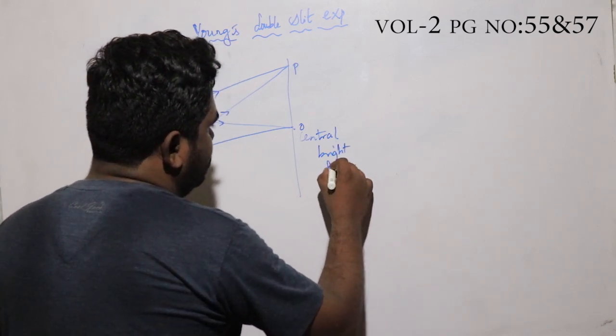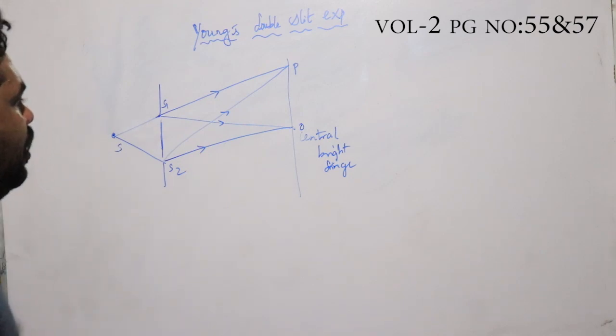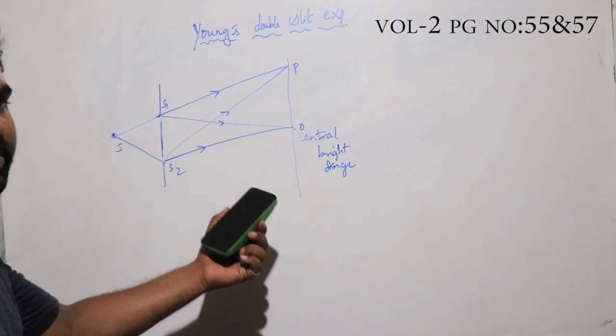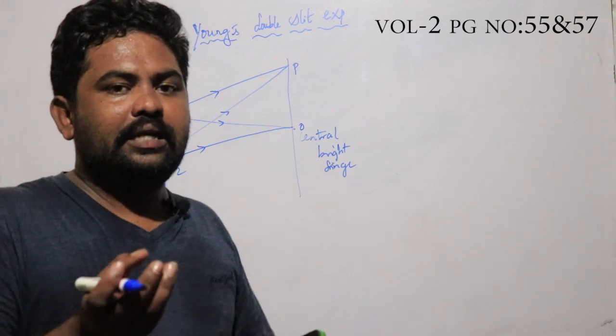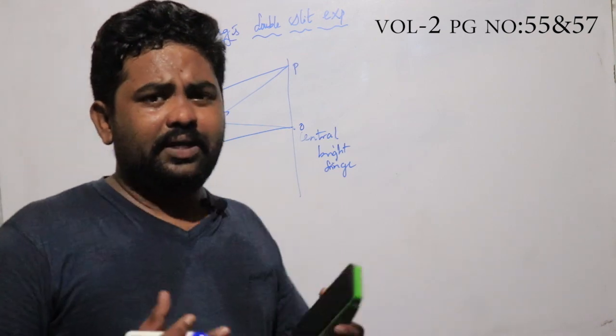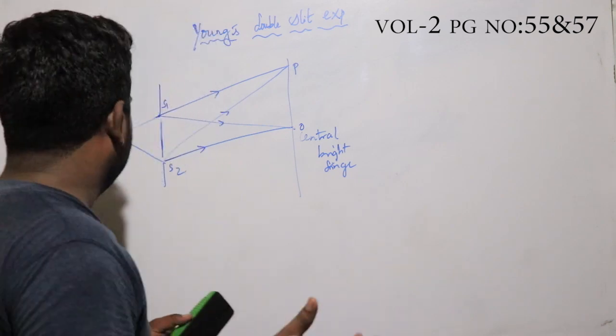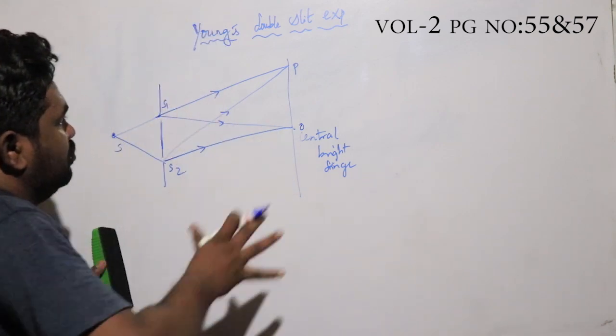Where the light meets at the center, we get a central bright fringe. We know it is a bright fringe because it is constructive interference. Constructive interference produces bright fringes. Now let me tell you about the arrangement.